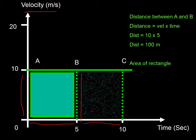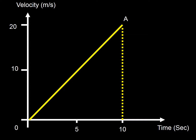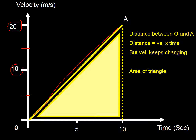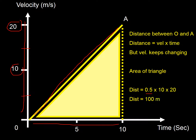This becomes really useful when the velocity is changing. If you want to work out the distance between O and A, you can't simply put in a single velocity value — it could be 20, 10, 15, 5. But if we think about the area, it's the area of a triangle. Area of a triangle equals half base times height, so 0.5 times 10 times 20 gives an area of 100 meters.